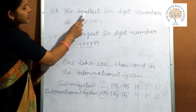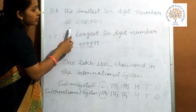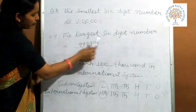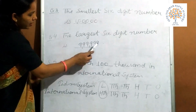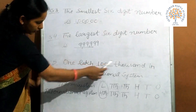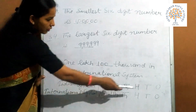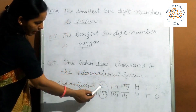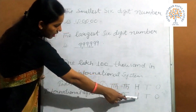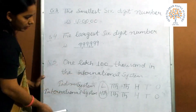Now question number 3: the smallest 6-digit number is 1,00,000. Now question number 4: the largest 6-digit number is 9,99,999. Now question number 5: comparing the Indian place value chart — ones, tens, hundreds, thousands, ten thousands, and lakhs — with the international place value chart — ones, tens, hundreds, thousands, ten thousands, and hundred thousands. So one lakh is equal to one hundred thousand in the international system.